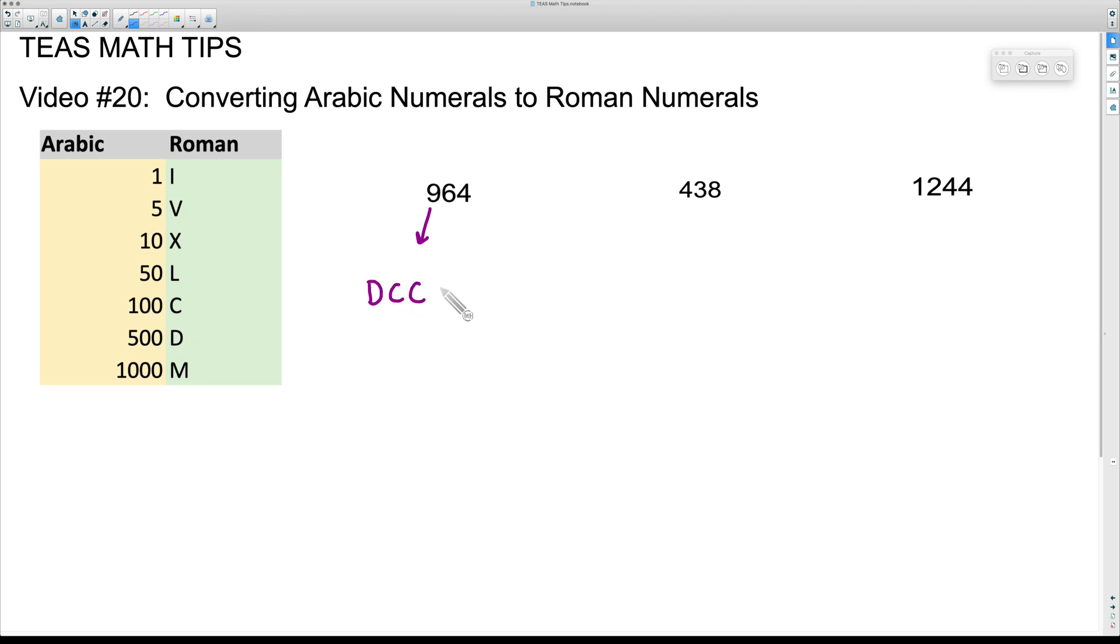If you watch video number 19, I mentioned something about putting a smaller in front of a bigger. Now what I want to stress to you is that you cannot put four of the same thing beside each other. One would look at this and think the D is 500, the C is 100, so we have 500, 600, 700, 800, 900. One would think that's correct, but not for Roman numerals.